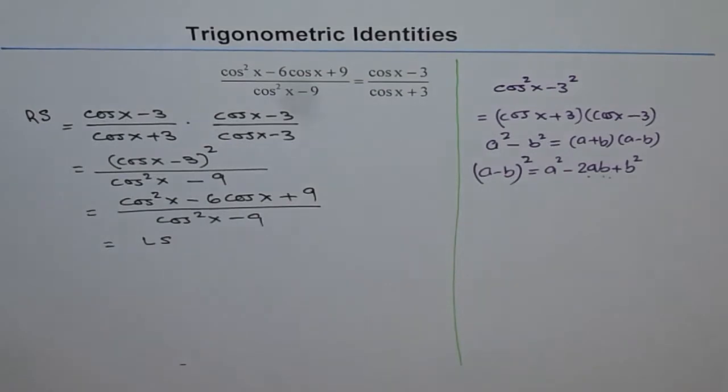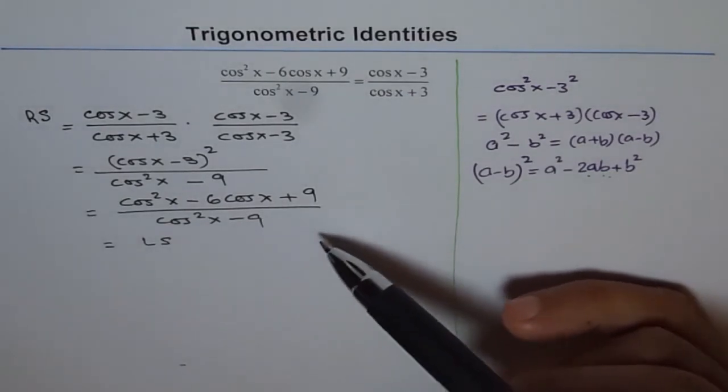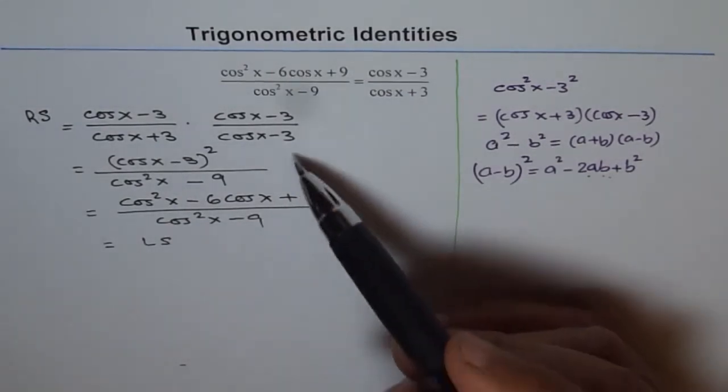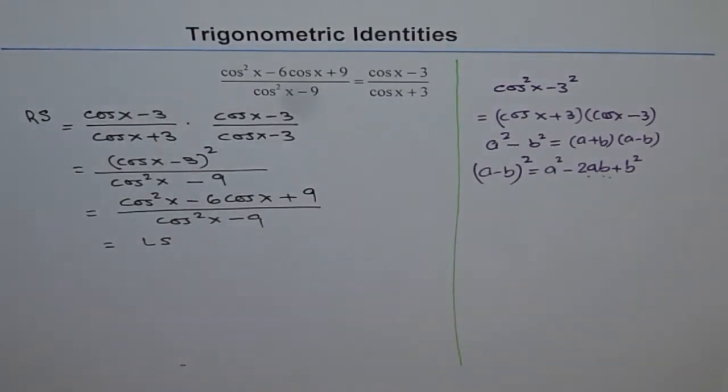So you could start from right side and land up in the left side and get to the same thing, or you can go backwards from left side to right side and follow these steps to prove the identity. So we proved it using difference of squares and perfect square.